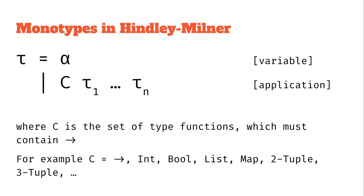C can be all kinds of different type functions. For Hindley-Milner it must at least have functions, but we'll also put in integers, booleans, lists, maps, two-tuples, three-tuples, four-tuples, and so on. For each of these, consider how many type arguments they take: functions take two, int and bool take zero, list takes one, map takes two, and a three-tuple takes three type arguments. You can have a go thinking about different type functions.